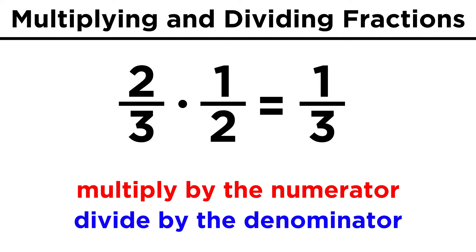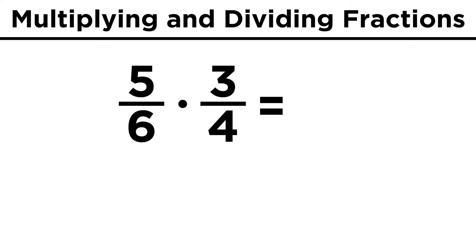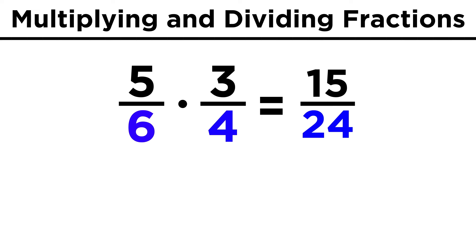In this way, when multiplying two fractions, we can think of it in terms of multiplying by the numerator and then dividing by the denominator. This is why multiplying a fraction by a whole number only affects the numerator, because we can think of a whole number as a fraction where the denominator is one. One times anything is one, so the denominator will not change. Let's try another: five sixths times three fourths. Five times three is fifteen, and six times four is twenty-four, so fifteen over twenty-four is our answer.